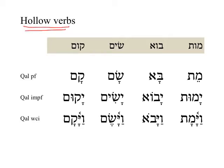Hollow verbs are so-called because the middle root letter is either yod or vav. Because these consonants sometimes can be pushed away or even lose their consonantal character, we call it hollow because of that nature. These are all found in the dictionary under their infinitive construct form, which is a little unusual, rather than the perfect 3MS.